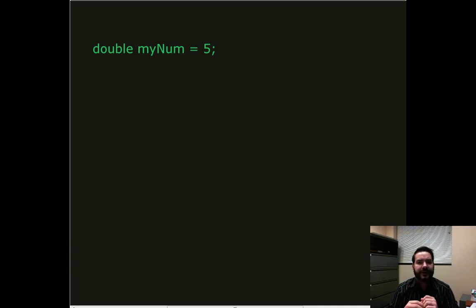So what happens if I want to change myNum? And when I mean change myNum, what happens if I want to change its data type? You might notice I've changed it from an integer to a double, and there's a reason for that. I want to show this off.